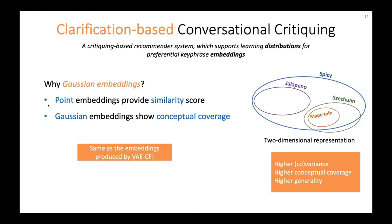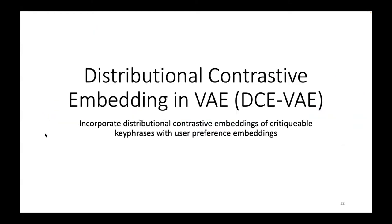The user embeddings produced by the backbone VAE-CF model are also in the form of multivariate Gaussian distributions. This enables the contrastive learning aspect of our final model. We now introduce our model, which we term DCVAE — it incorporates distributional contrastive embeddings of critical keyphrases with user preference embeddings in a VAE recommendation framework.